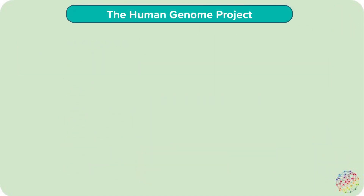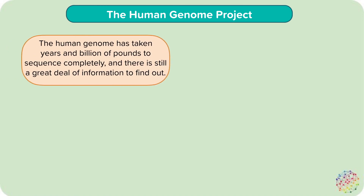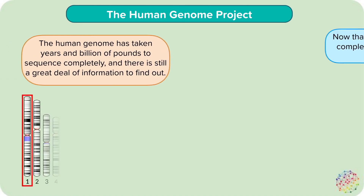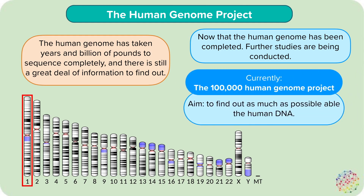The sequencing of the complete human genome took several years and billions of pounds. Although it provided a wealth of information, there is still much more we can find out in further study. For example, a new study called the 100,000 Genomes Project sets out to sequence this many people's genomes, with the aim to find out as much as possible about human DNA.